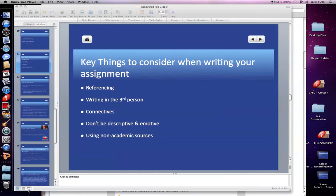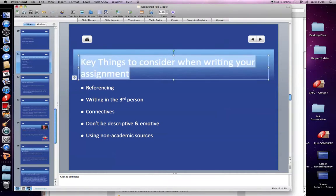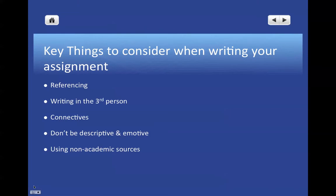Michael here again, and this time we're going to be looking at the specific things that you need to consider when writing your assignment — looking at some of the academic limitations and some of the boundaries that you should stay within. You might find that you're comfortable with one or two of those areas, so if you want, just skip through. You might find something quite useful even though you think you're already skilled in that area.